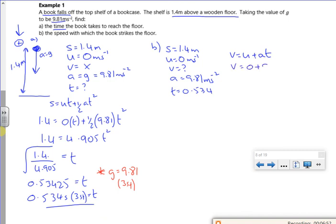So v would be 0 plus 9.81 times 0.534. I might want to use the better answer with more decimal places that I've got in my calculator. So I'll just use the actual better answer. That gives me 5.24099, so to three sig figs, 5.24 meters per second. So that's that first example done. I'll stop there and do another one next time.